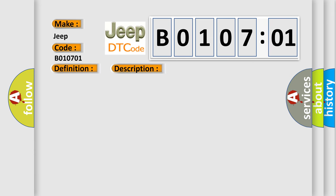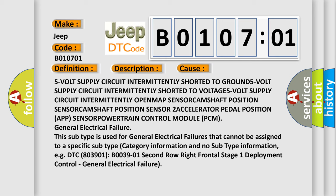This diagnostic error occurs most often in these cases: 5-volt supply circuit intermittently shorted to ground, 5-volt supply circuit intermittently shorted to voltage, 5-volt supply circuit intermittently open, MAP sensor, camshaft position sensor, crankshaft position sensor, accelerator pedal position sensor, or powertrain control module PCM general electrical failure.